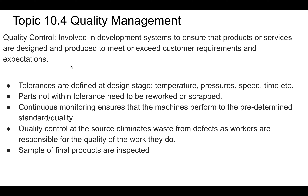One of the things we want to do in quality control is define tolerances at the design stage — these are basically design specifications like temperature of processes, pressure, speed, time, those kinds of things. Parts that don't meet those tolerances need to be reworked or scrapped. This is where waste comes in, but it's better to catch something in the manufacturing process than in the final product, because less will need to be reworked or scrapped.